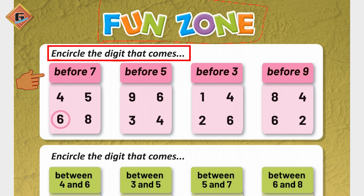As you can see, here we have to encircle the digit that comes before. Here we have numbers seven, five, three, and nine. We have to find the number that comes before each of these — before seven, before five, before three — and circle those numbers from the given options.